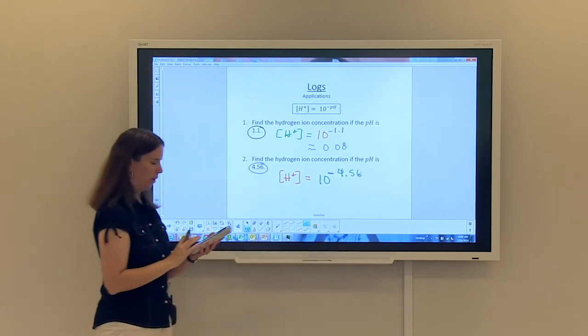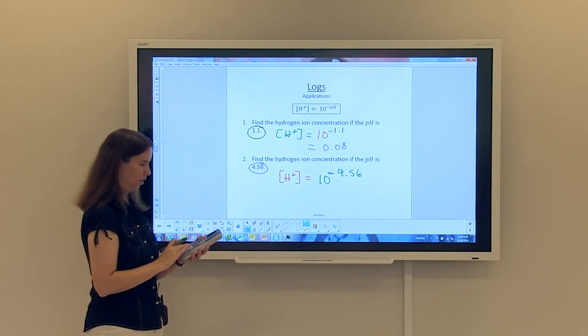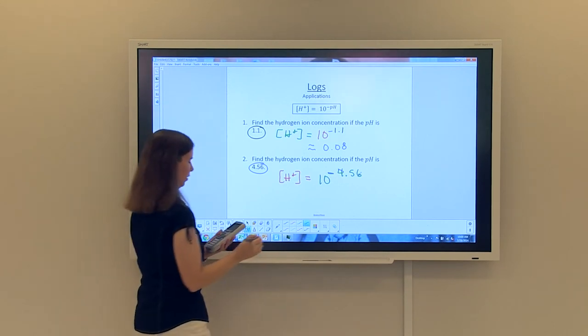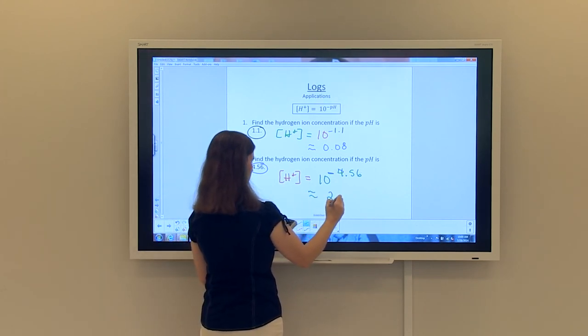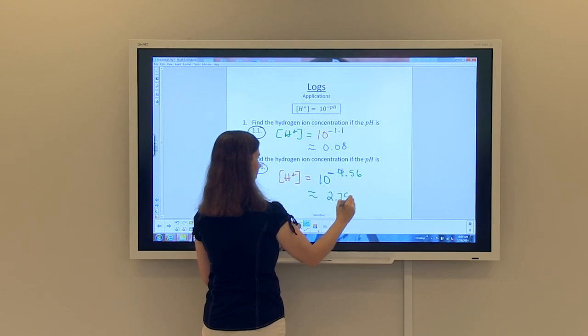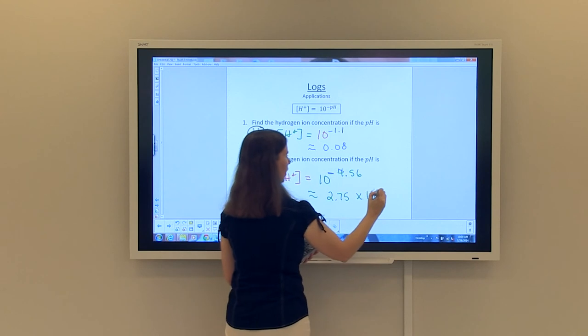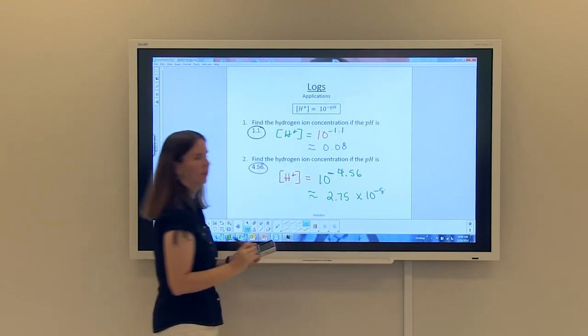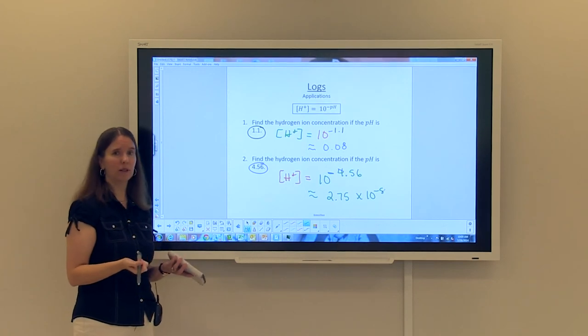And simply plugging that again into the calculator, and taking it to about two decimal places, that will be approximately 2.75 times 10 to the negative 5th power written in scientific notation. So that kind of sums up logarithms and their applications.